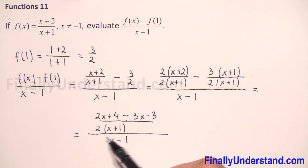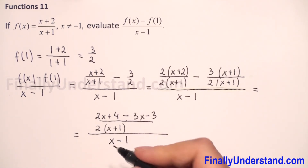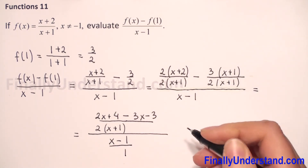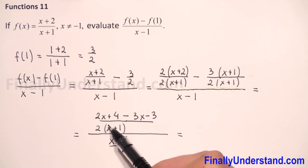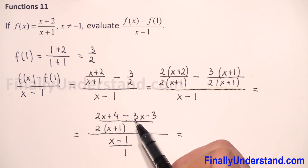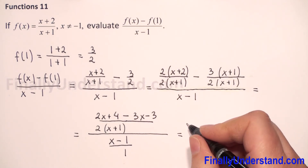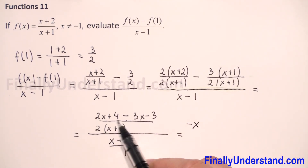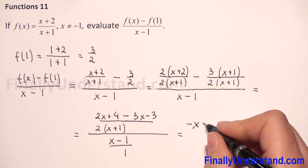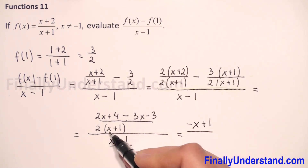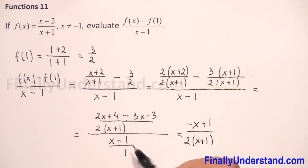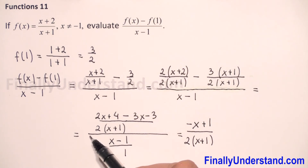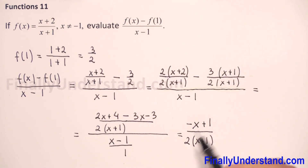Because I have a fraction in this numerator, I will change the numerator to a fraction and put it over 1. I can now combine like terms: 2x minus 3x is minus x, and 4 minus 3 is 1. So I have negative x plus 1, over 2x plus 1.